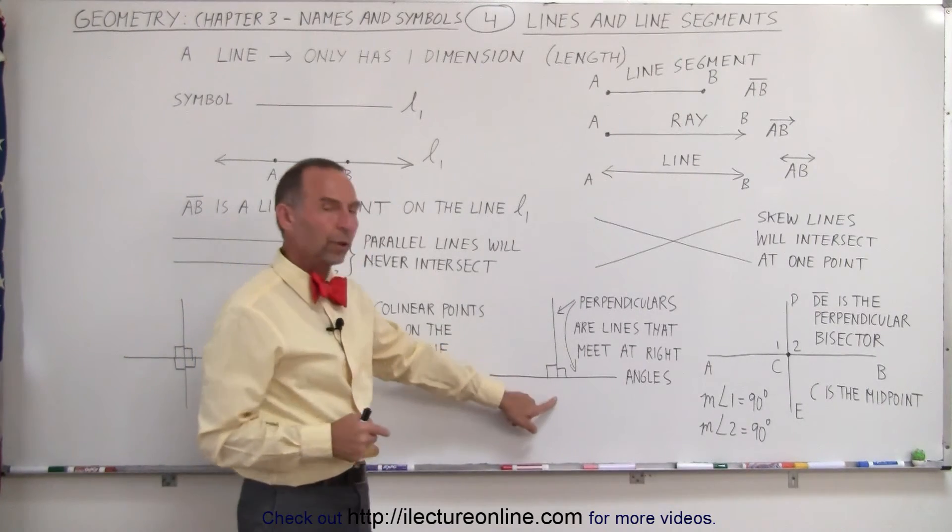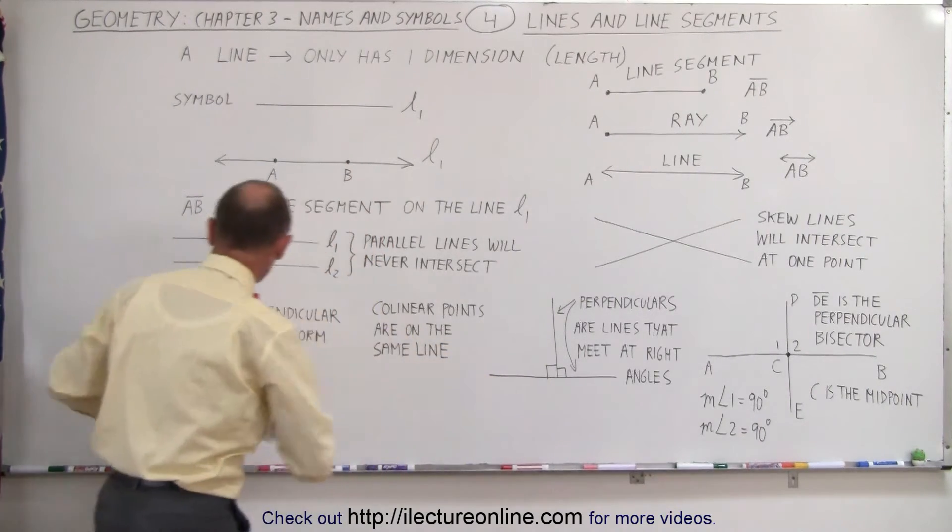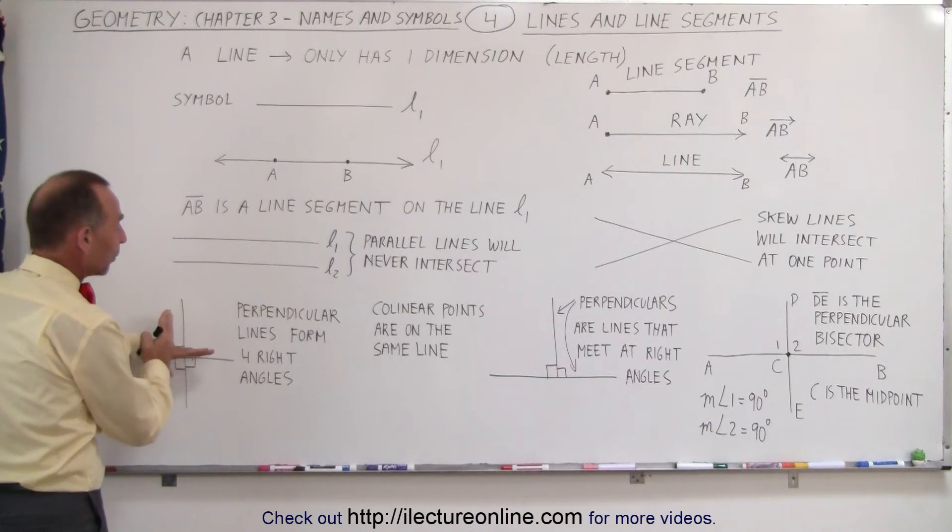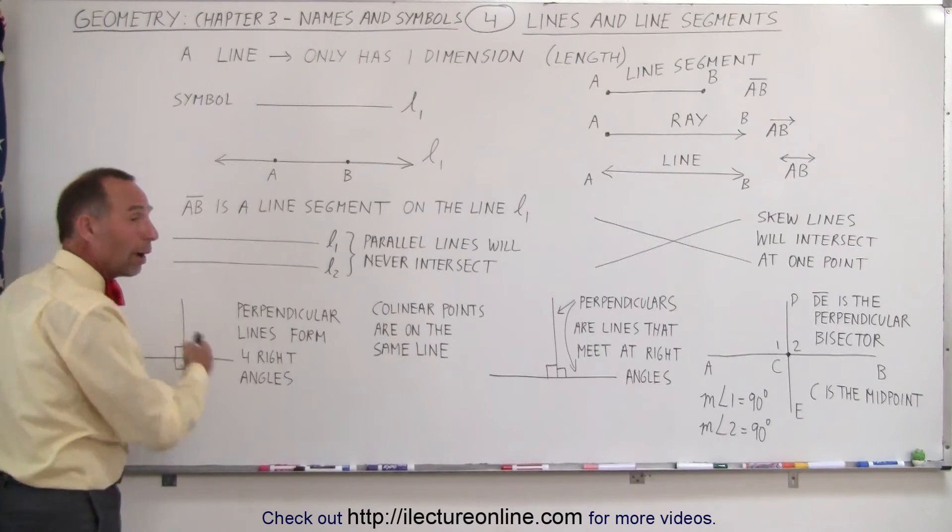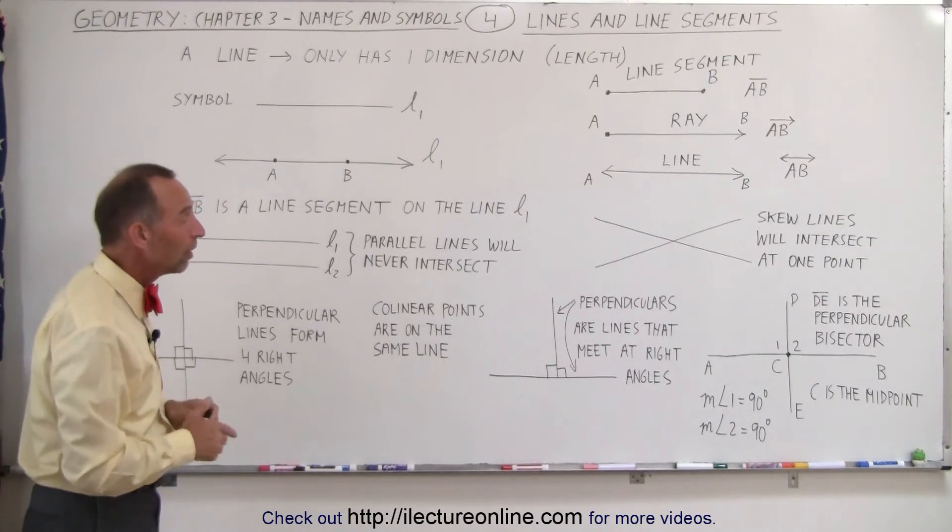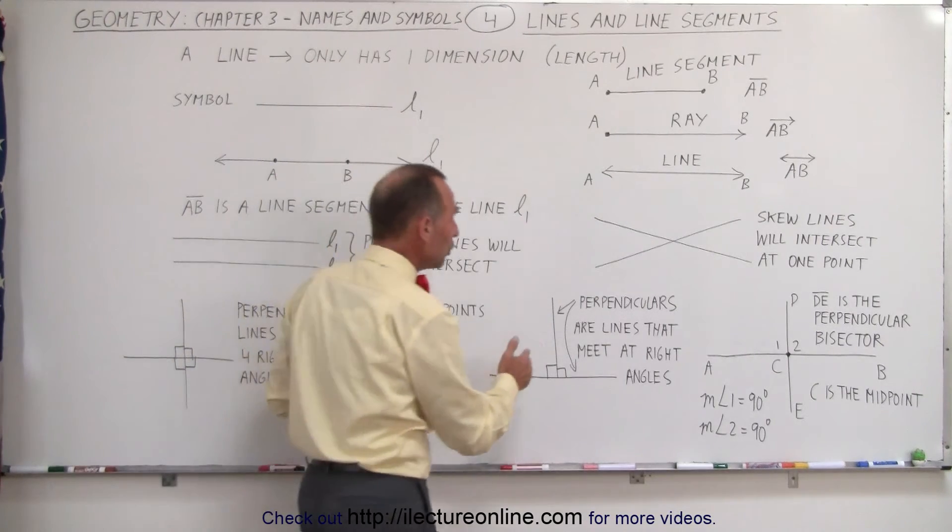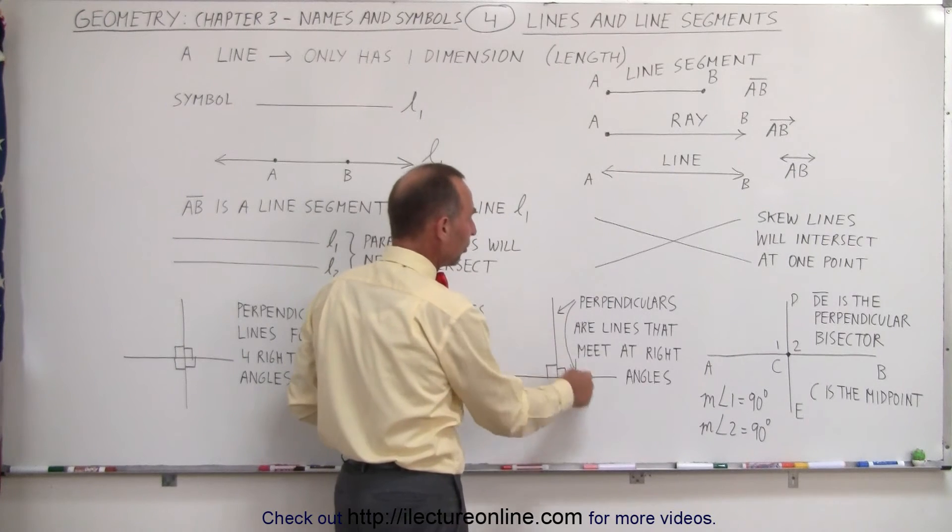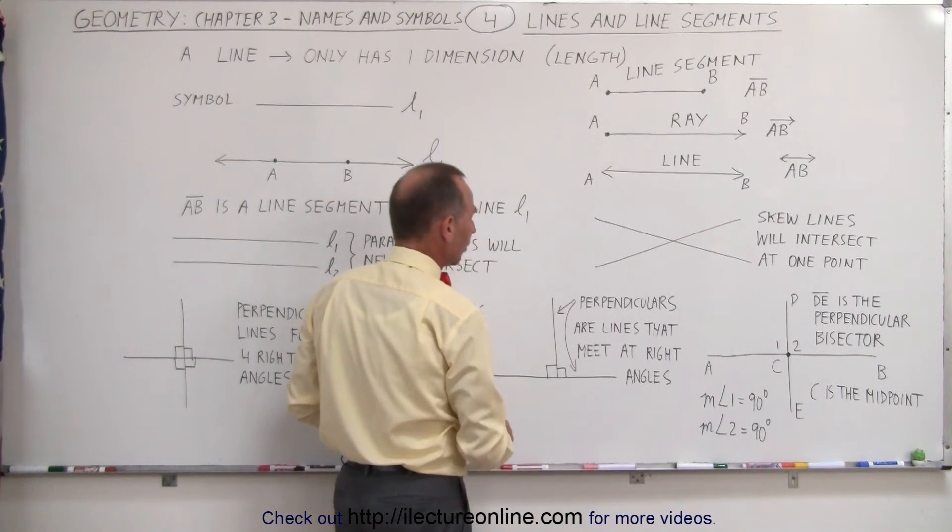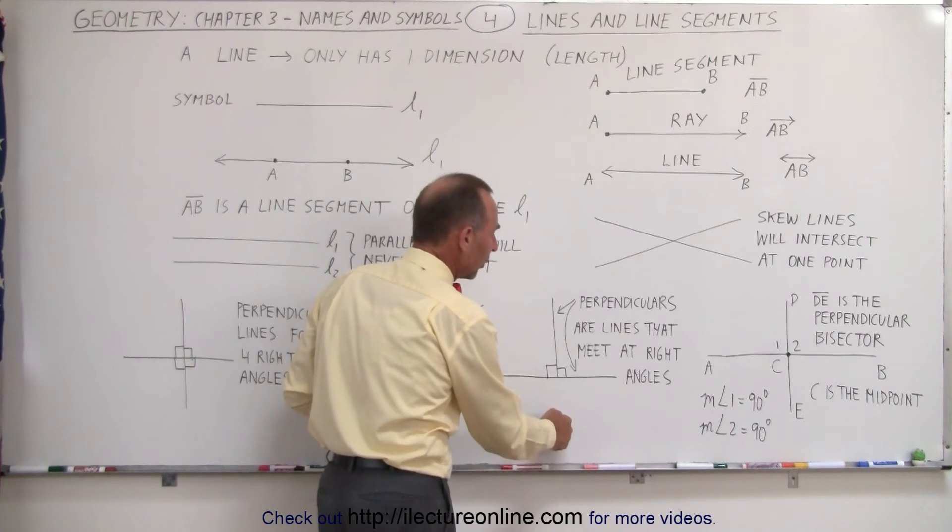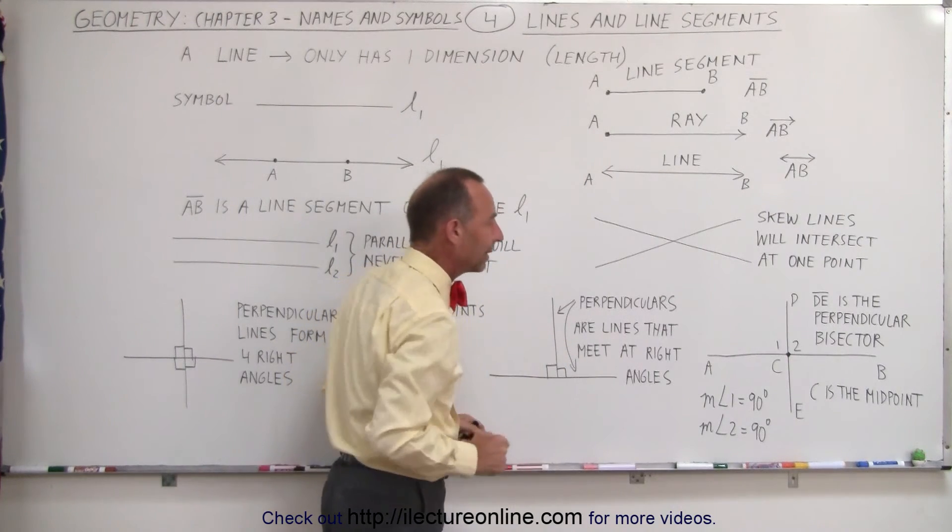Perpendiculars don't cross one another. That's the difference between two lines crossing one another like this in a perpendicular fashion. They're perpendicular to each other, but since they're lines, they go on forever in both directions. Perpendiculars do not cross one another. So these are perpendiculars. These are lines that meet at right angles.